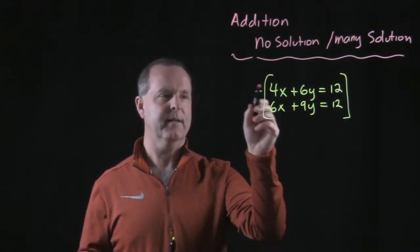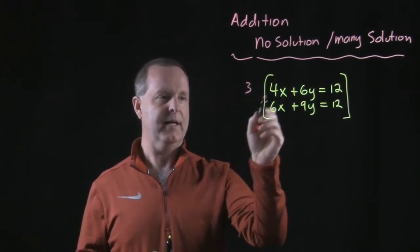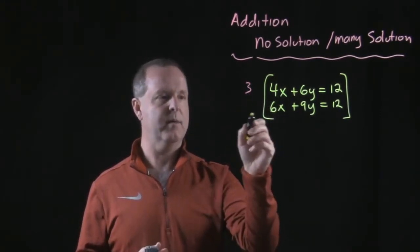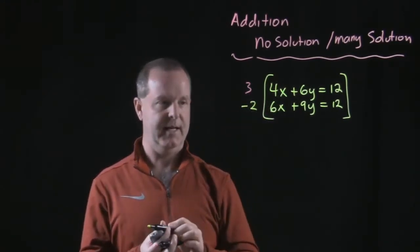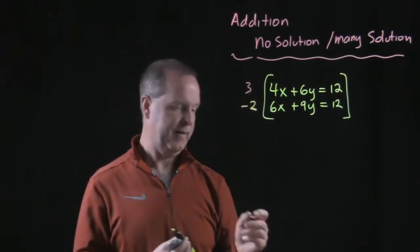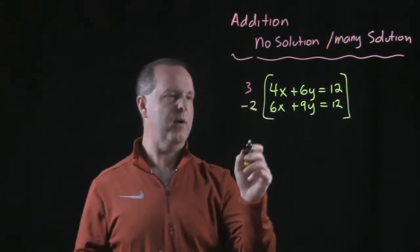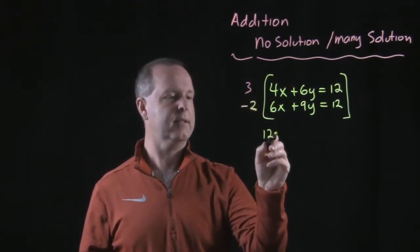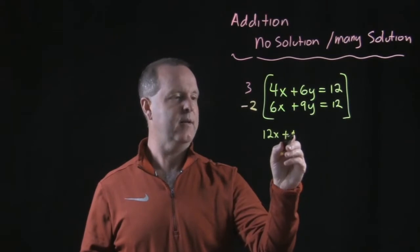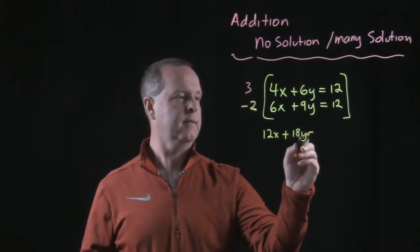Let's try to get the x's to eliminate. And so doing this, multiply the top one by a 3 and the bottom one by a negative 2. All right. So scale that one by 3. This becomes a 12x plus an 18y equals 36.